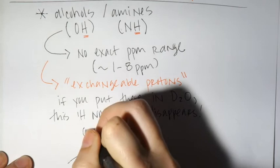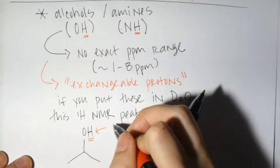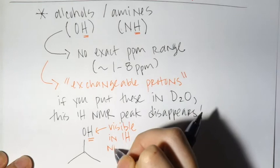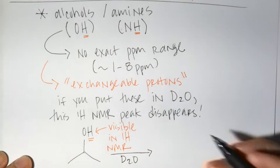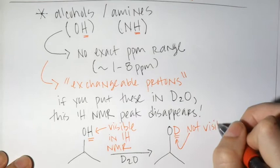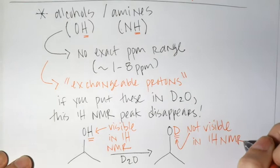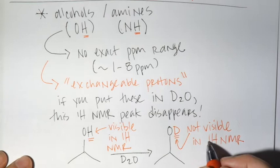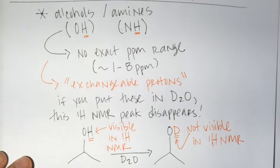This is an actual experiment you can do — take an NMR, see where the peaks are, then mix with D2O and take another NMR; the peak will be absent. We won't be doing that in this class, but in problems you might see a hint like 'this peak disappears in D2O,' which tells you that peak belongs to an OH or NH. Deuterium is H2 and doesn't show up in H1 NMR since H1 only detects that specific isotope.